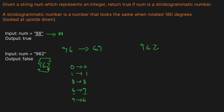What we want to do is use two pointers. Say we have 962 — we'll have a pointer at the left side and a pointer at the right side, and we'll compare: are these numbers strobogrammatic? When flipped, does 9 match the flip of 2? Obviously 2 is not strobogrammatic so we stop there. For 88, we check: is the flip of 8 the same as the flip of 8? It is, so we return true.